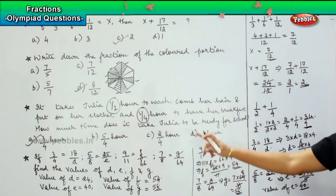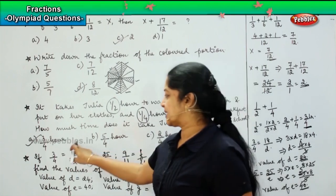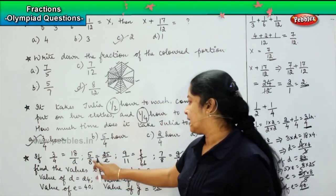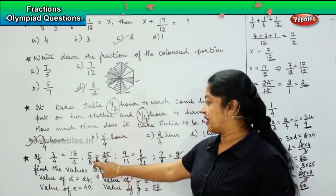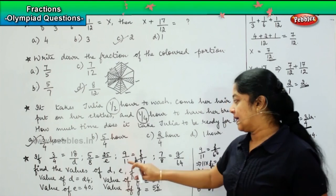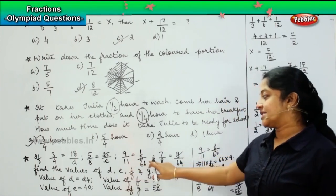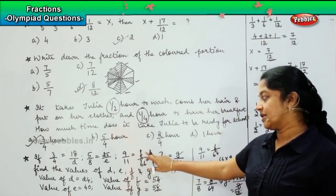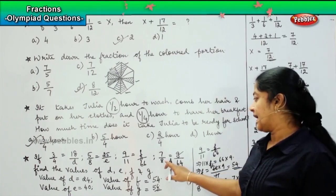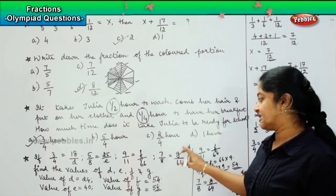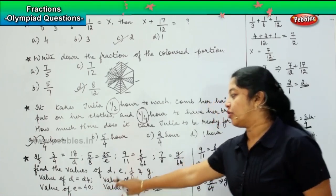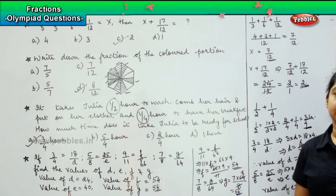Let's verify by substitution: 3 sixes are 18, 4 sixes are 24 — correct for D. 5 fives are 25, 8 fives are 40 — correct for E. 11 sixes are 66, 9 sixes are 54 — correct for F. 8 eights are 64, 7 eights are 56 — correct for G. We have found the values of D, E, F, and G.